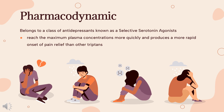Rizatriptan has a weak affinity for other 5-HT1 receptor subtypes — 5-HT1A, 5-HT1E, 5-HT1F — and the 5-HT7 receptor, but has no significant activity at 5-HT2, 5-HT3, alpha- and beta-adrenergic, dopaminergic, histaminergic, muscarinic, or benzodiazepine receptors.